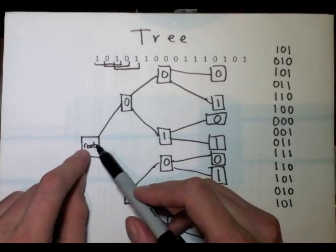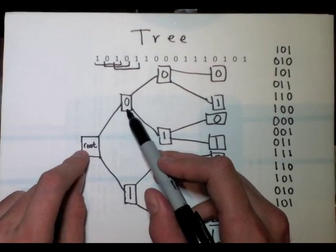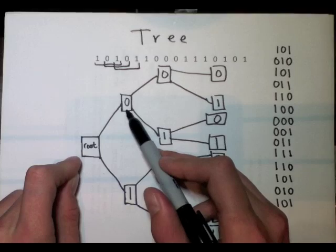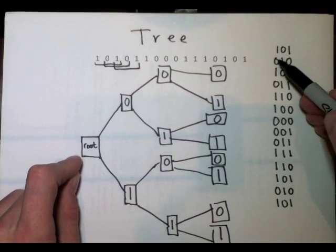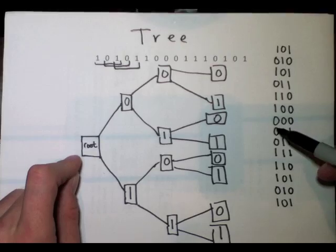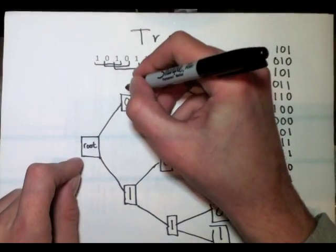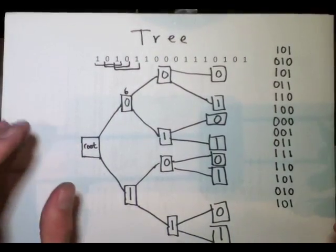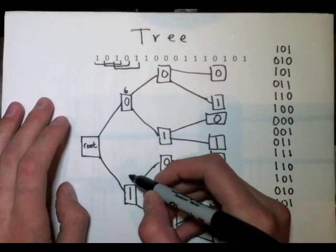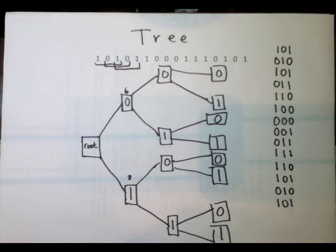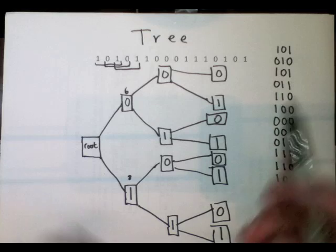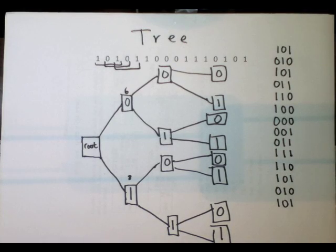How many of our sequences begin with a 0? That's the first character of each sequence. Counting through: 1, 2, 3, 4, 5, 6 — there are 6 sequences that begin with 0. We know there are 14 total, so that means there are 8 sequences that begin with 1. Almost everybody drew the tree right at least up to that point.